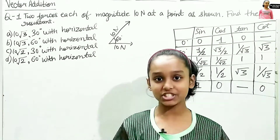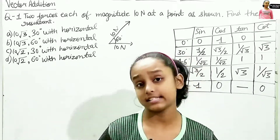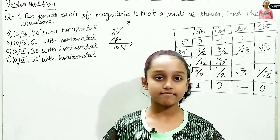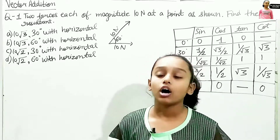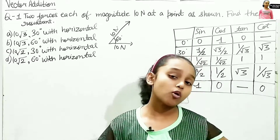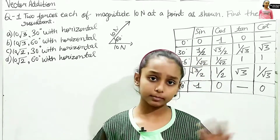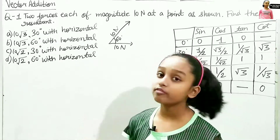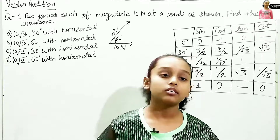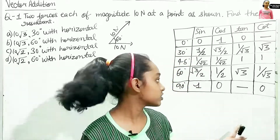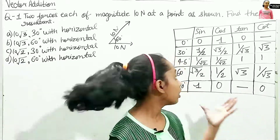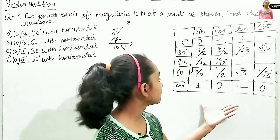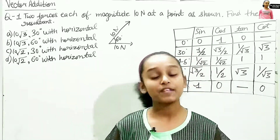Hey guys, I am Natasha and today we are going to do some best questions of vector addition through formulas. As I told you in the previous video, we have done the analytical method of vector addition — meaning we covered the formulas for finding the magnitude of the resultant and the direction of the resultant. Now we are going to use those formulas. I am also going to show you the trigonometric triples, which I have drawn here, as they will be useful in the questions.